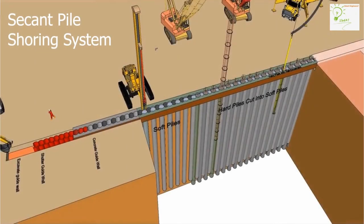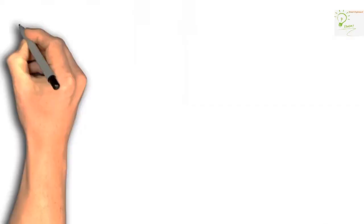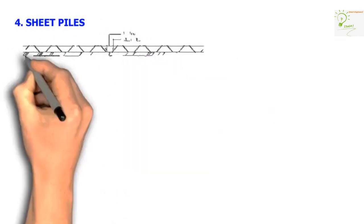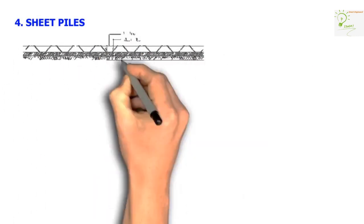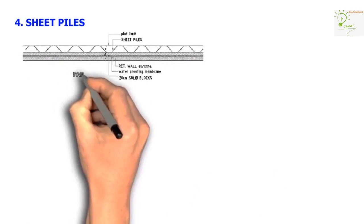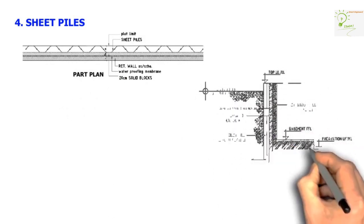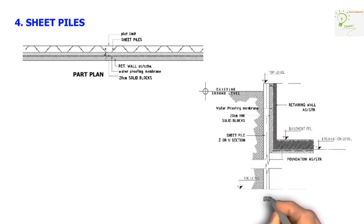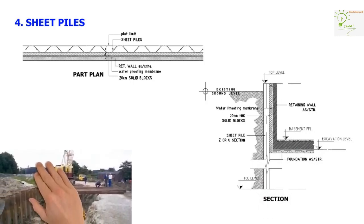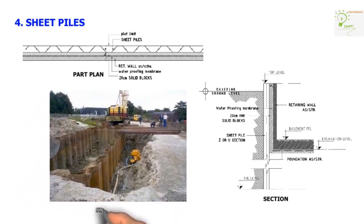Please watch our interesting video made on secant pile shoring system for your complete knowledge. Sheet piles, although can be used to retain soil, are best used when we need to isolate an excavation from bodies of water — specifically a creek, a pond, or on a seaside — and are commonly seen in port and harbor construction. Similar to soldier piles, they are constructed by driving prefabricated Z or U steel sections into the ground using a vibro hammer. Depending on depth, the sheet piles can be welded together to reach the desired depth.